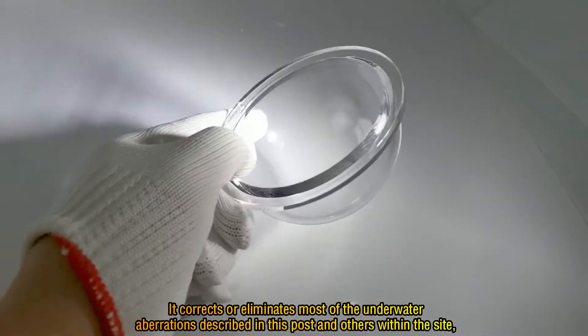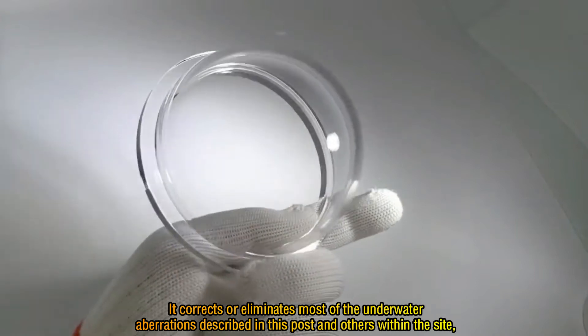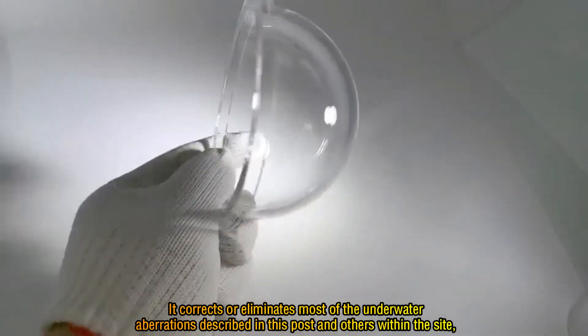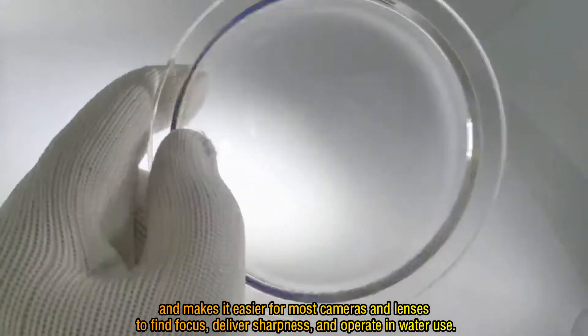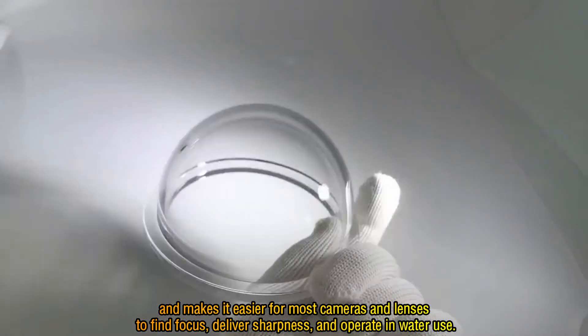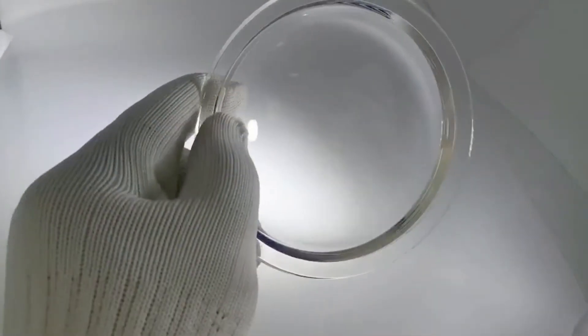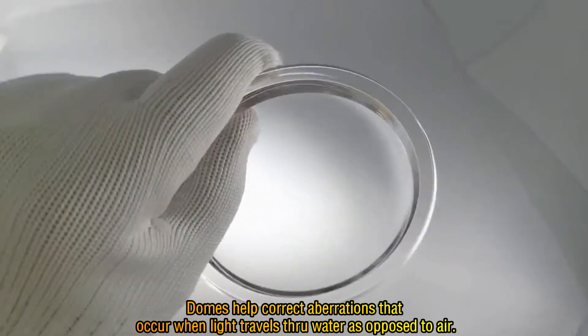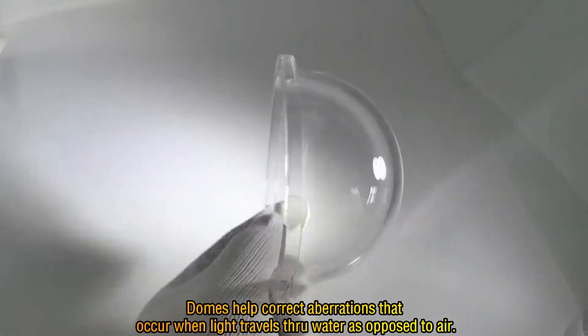It corrects or eliminates most of the underwater aberrations described in this post and others within the site, and makes it easier for most cameras and lenses to find focus, deliver sharpness, and operate in water use. Domes help correct aberrations that occur when light travels through water as opposed to air.